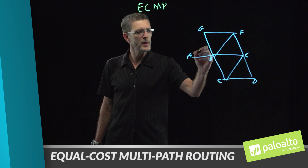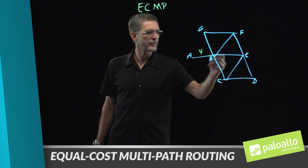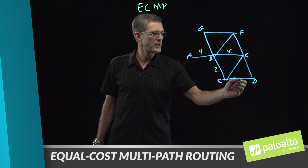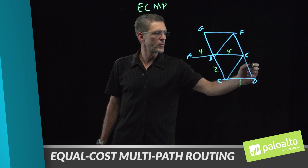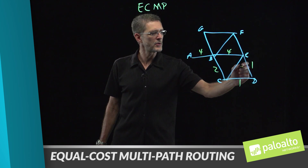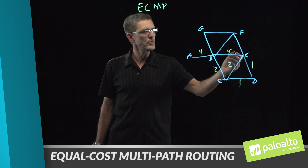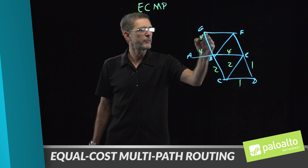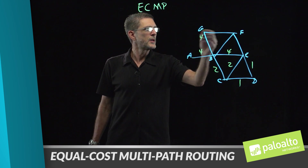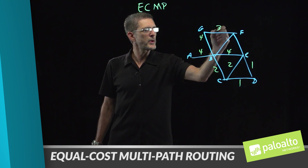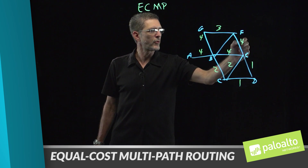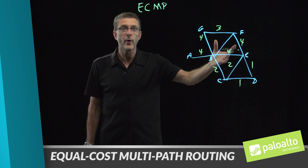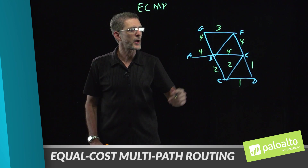From A to B, the route cost would be 4. From B to E, a route cost of 4. B to C will be 2. C to D is 1. We'll give these some various route costs — from B to G will be 4, G to F a 3, and from F to E a 4. So this would be a traditional routing configuration in an enterprise environment.